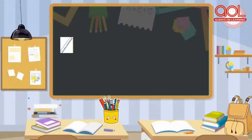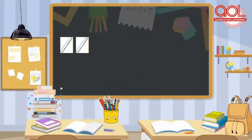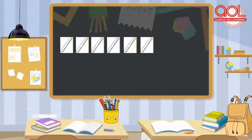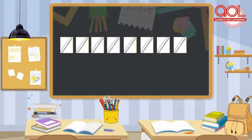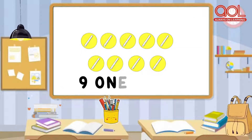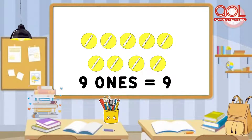In the first picture, how many ones do you see? We have one one, which can also be written as number one. Here we have one, two, three, four, five, six, seven, eight, nine — nine ones, which can also be written as number nine.